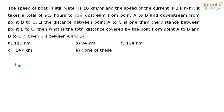There are three points. The boat in still water is travelling with a speed of 16 kilometers per hour and the water current is 2 kilometers per hour. So the speed of the boat downstream is 16 plus 2, that is equal to 18 kilometers per hour. The speed of the boat upstream is equal to 16 minus 2, that is equal to 14 kilometers per hour.